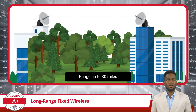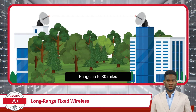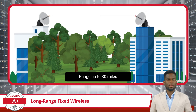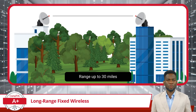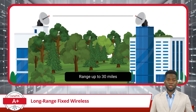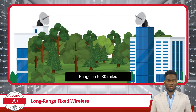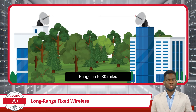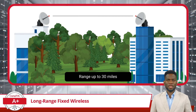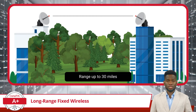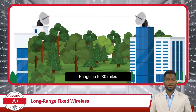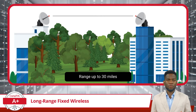Firstly, let's demystify what Long-Range Fixed Wireless is. Imagine connecting two points, like two buildings or towers, without the need for physical cables like fiber optics or copper wires. That's what Long-Range Fixed Wireless does. It uses radio waves to transmit data over significant distances. This technology is particularly useful in areas where laying cable is impractical or too expensive, like rural or remote locations.